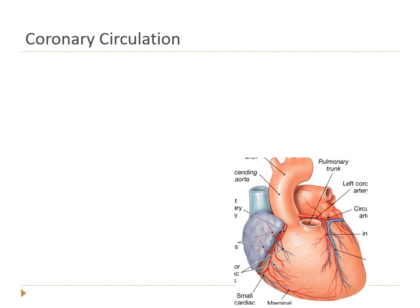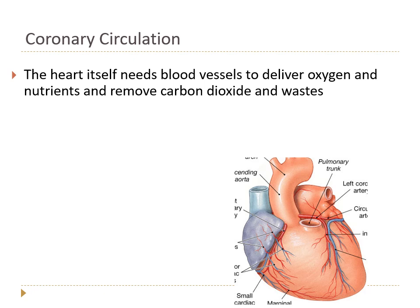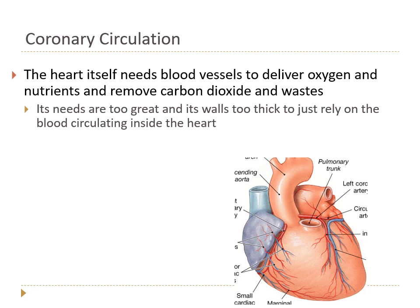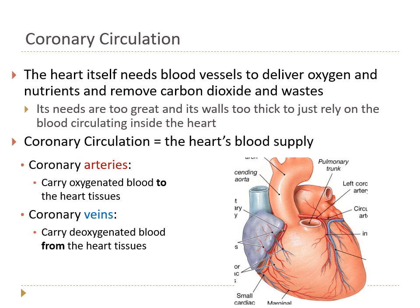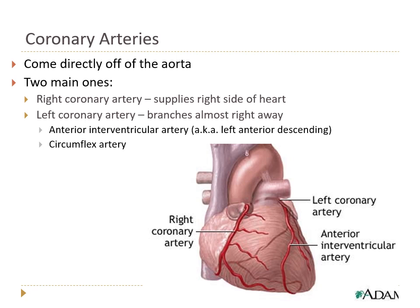When we talk about heart disease, one thing we could be discussing is trouble with the coronary circulation. The heart muscle is relatively thick, and you can't rely on the blood sitting inside the chambers to nourish it. The heart has to have its own set of blood vessels to deliver oxygen and nutrients and remove carbon dioxide and waste. That's the coronary circulation — coronary arteries carry oxygenated blood to the heart tissues, and coronary veins carry deoxygenated blood away from the heart tissues.